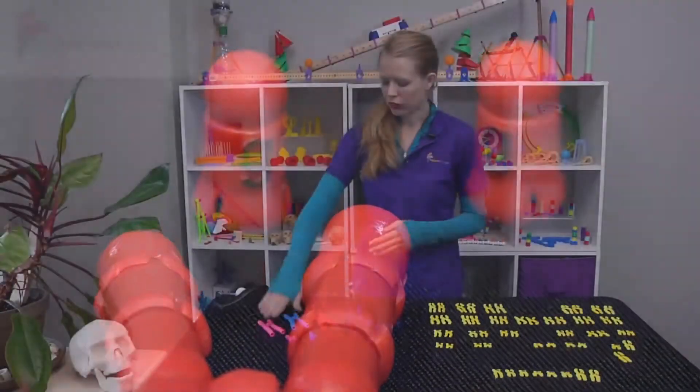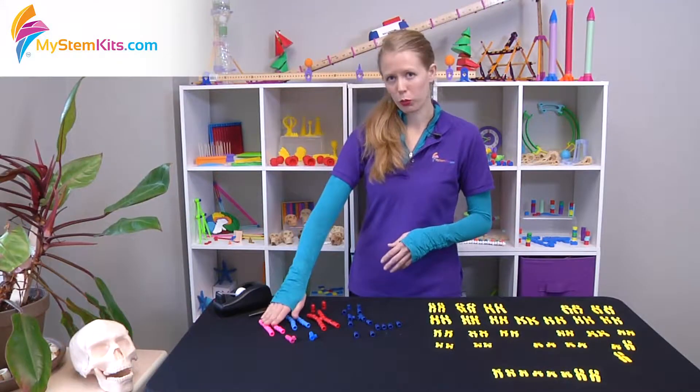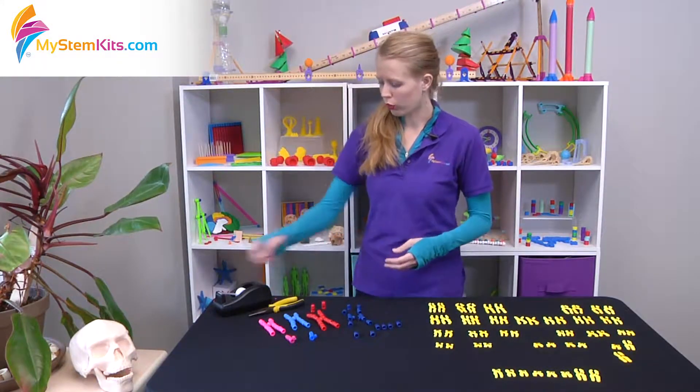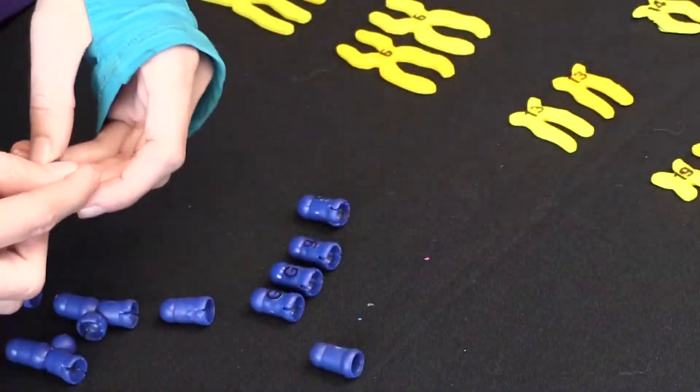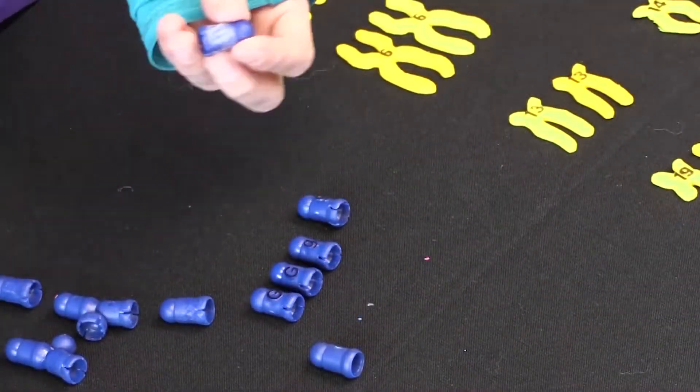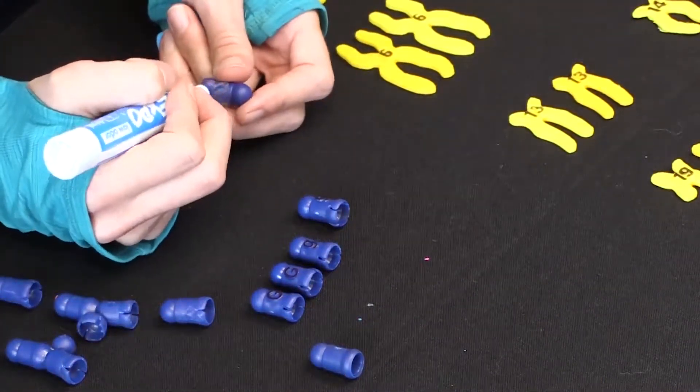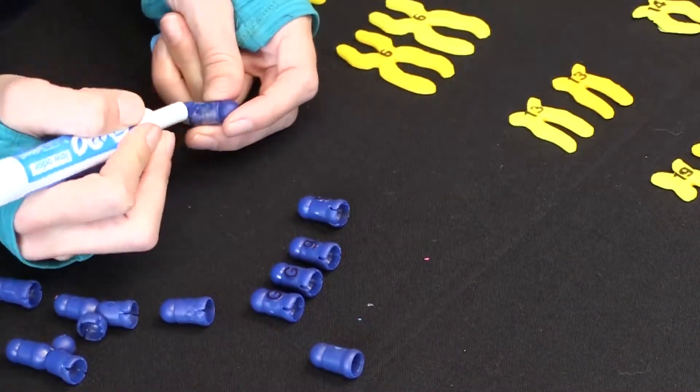Now if you want to add genes representation to the smaller chromosome sets or add in different letters you can also do so simply using tape. Slide it onto the piece you would like to add the letter to. Then take a permanent marker and add the letter of your choice to it.